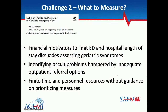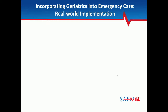The second challenge is what to measure. Falls, vulnerability, and dementia may be the wrong measures — they may have nothing to do with what our key stakeholder wants to know. Payers have financial motivations to limit ED visits and hospital length of stay. There may be occult problems we don't identify, like dementia — we know we miss about 75% of dementia cases and most delirium cases coming through the ED. We have finite time and personnel to gather measures, so how do we prioritize? With that, I'll turn this over to Eula.